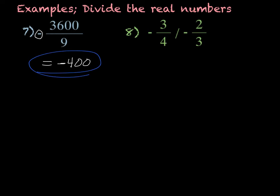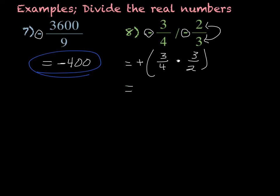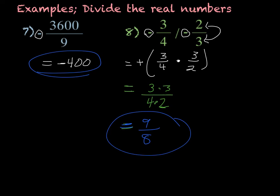The next one: we have negative 3 fourths divided by negative 2 thirds. The double negative makes the answer positive. We flip the second fraction and then multiply, giving us 3 fourths times 3 over 2. Multiplying straight across: 3 times 3 in the numerator over 4 times 2 in the denominator. 3 times 3 is 9, and 4 times 2 is 8. It's already simplified — your final answer is 9 over 8.